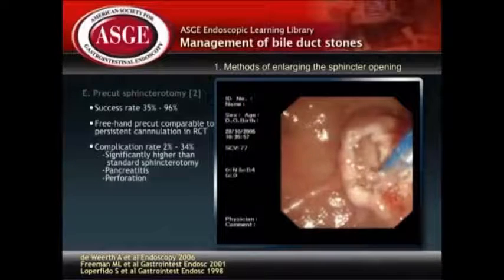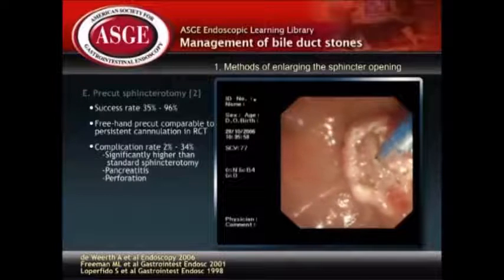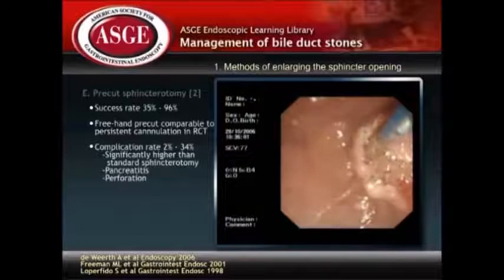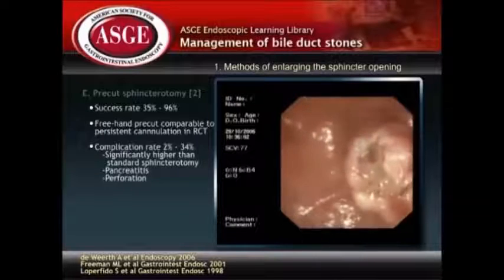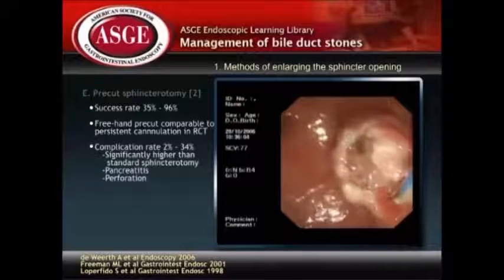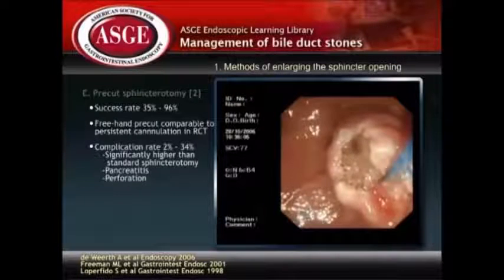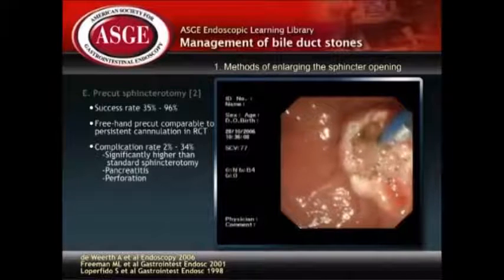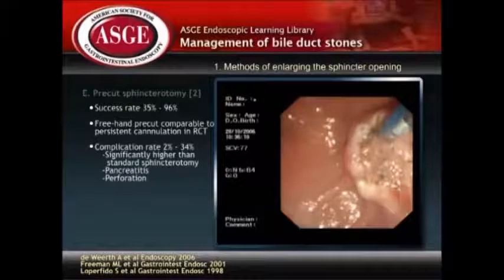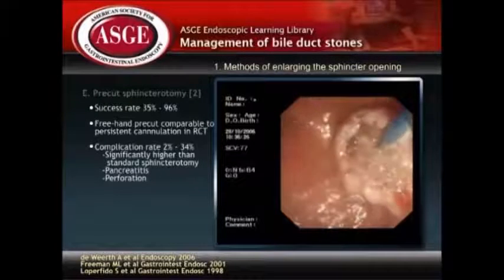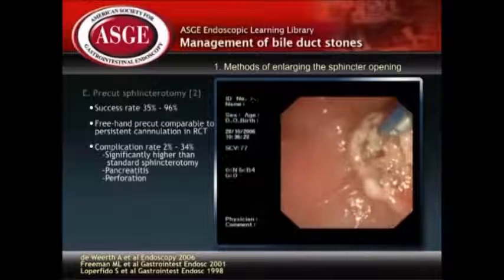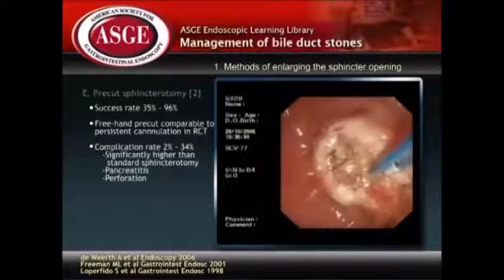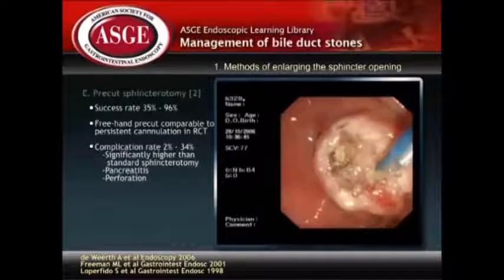This video demonstrates pre-cut sphincterotomy with the freehand needle knife technique. The incision began with the tip of the needle knife lodged at the papillary orifice. It was then extended upwards between 11 and 1 o'clock in a progressive manner to allow a step-by-step incision of the papillary sphincter.